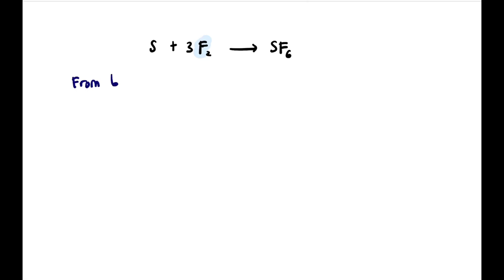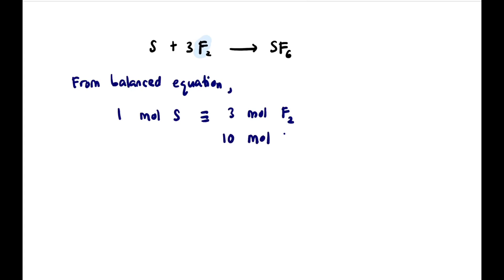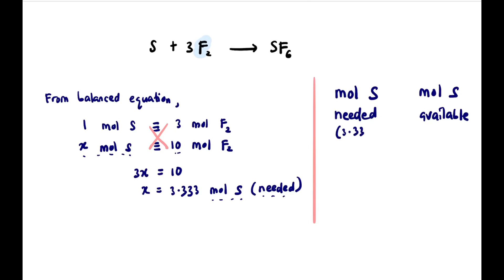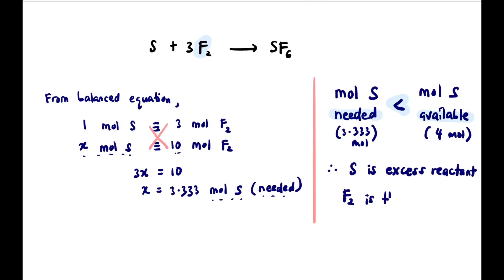Let's look from the other perspective. From the balanced equation, 1 mole of S reacts with 3 moles of F₂. If we fix moles of F₂ at 10 moles available, how many moles of S are needed? Cross-multiplying: 3x = 10, so x = 3.333 moles of S needed to react with 10 moles of F₂. Comparing moles of S needed (3.333) versus moles of S available (4): 4 is greater, meaning we have excess S. Therefore S is the excess reactant, and automatically F₂ is the limiting reactant.